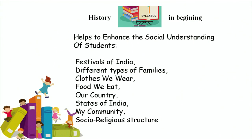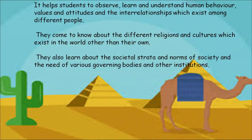History at the beginning level helps to enhance the social understanding of students. We teach about festivals of India, different types of families, clothes we wear, food we eat, our country, states of India, and social and religious structures. This helps children connect with and appreciate their surroundings. It also helps students observe, learn, and understand human behavior, values, and attitudes, and the interrelationships among different people, different religions and cultures of the world, societal norms, and the need for various governing bodies and institutions.